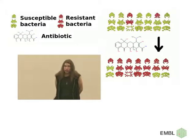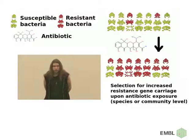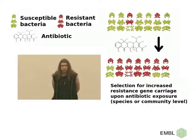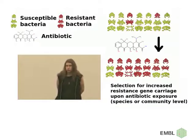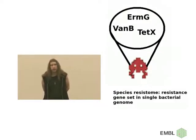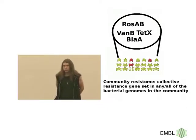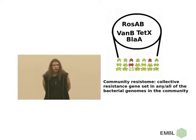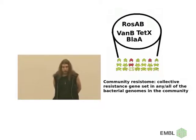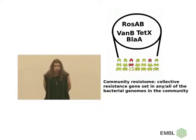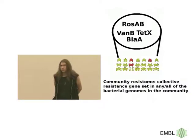What is a resistome? It basically refers to the set of genes allowing bacteria to survive exposure to antibiotics in some given context. For example, we can talk of the resistome of a bacterial species as the set of such genes that its genome contains. We can likewise talk of the collective resistome of a community of co-occurring bacteria as the set of antibiotic resistance genes that they have together, and so on up to the level of the biosphere as a whole.